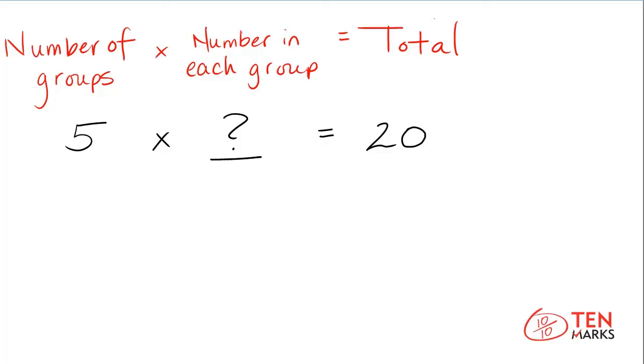What if you're given the problem five times some number equals twenty? The first thing to do is look at the multiplication sentence and figure out which information you're given and which information you're trying to find.